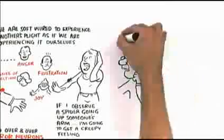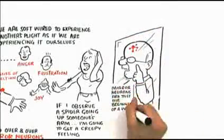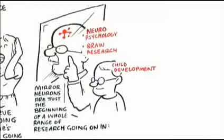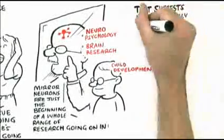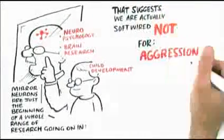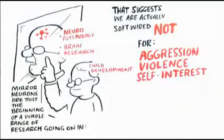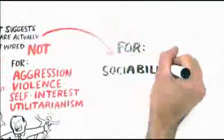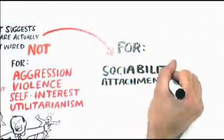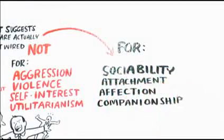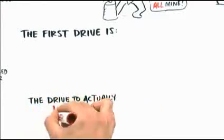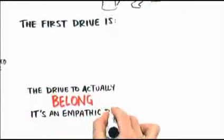Mirror neurons are just the beginning of a whole range of research going on in neuropsychology and brain research and in child development that suggests we are actually softwired not for aggression and violence and self-interest and utilitarianism, but for sociability, attachment, affection, companionship. The first drive is the drive to actually belong. It's an empathic drive.